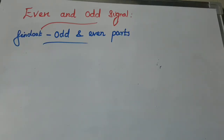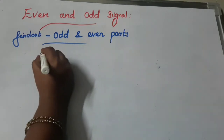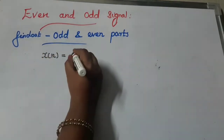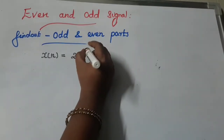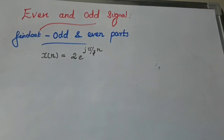The next question is to find out the even and odd parts of the signal in discrete-time form. The question is: x(n) is equal to 2e^(jπn/3). This is the discrete-time signal, and we have to calculate the even and odd parts of this DT signal.